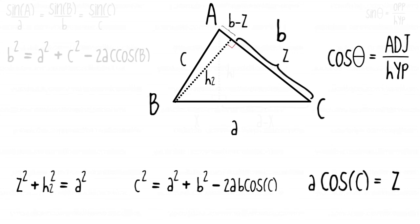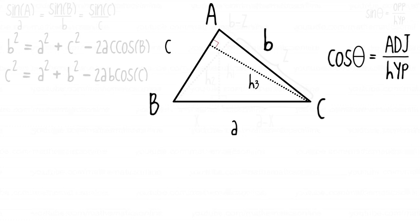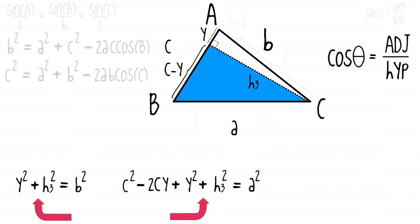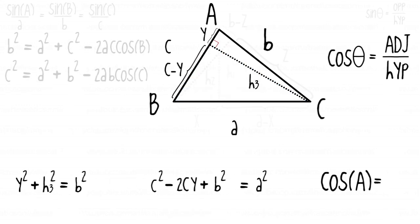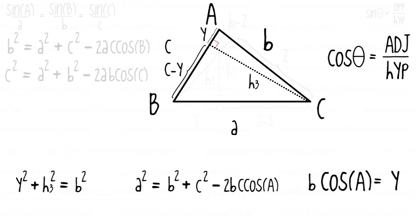In order to find the last cosine law, we define the altitude h3, which splits side c into y and c minus y. We use the Pythagorean theorem to define the relationship of the sides of both right triangles, simplify the second equation, substitute b² into it, and find cosine of A equals y over b. Solving for y and substituting into the second equation, then rearranging the terms, gives us the last cosine law: a² = b² + c² − 2bc·cosine of A.